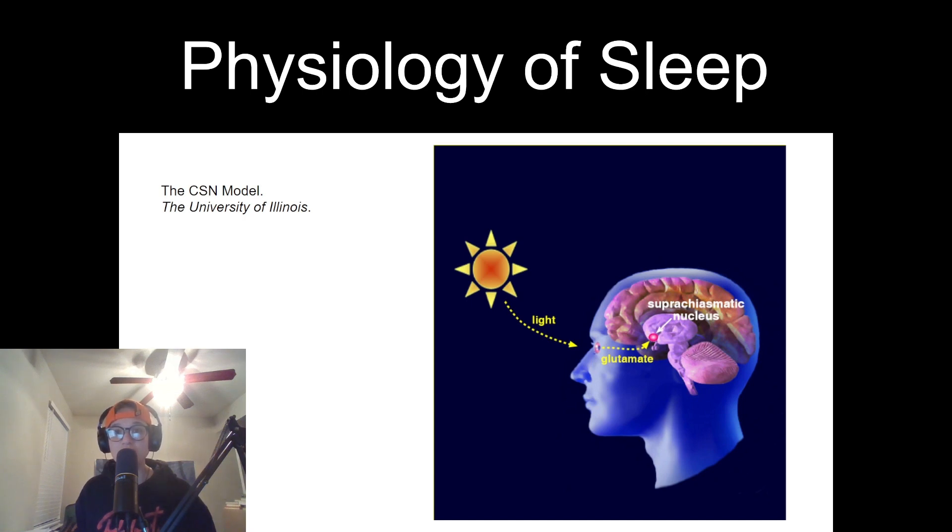The sleep stages also exhibit distinct features in terms of muscle tone and eye movement. During non-REM sleep, muscle tone decreases and body movements are minimal. In contrast, during REM sleep, the muscles become temporarily paralyzed, likely to prevent us from acting out our dreams.